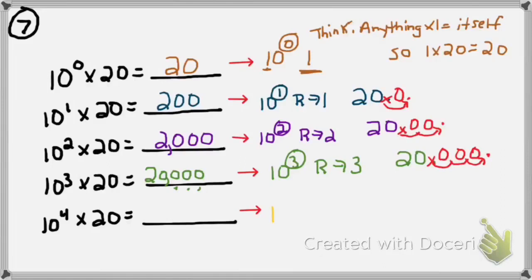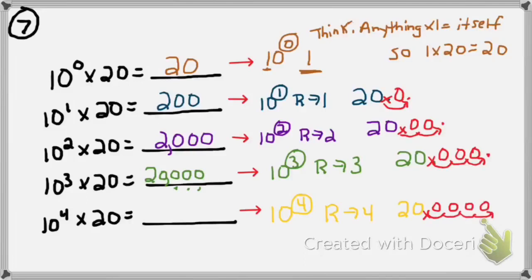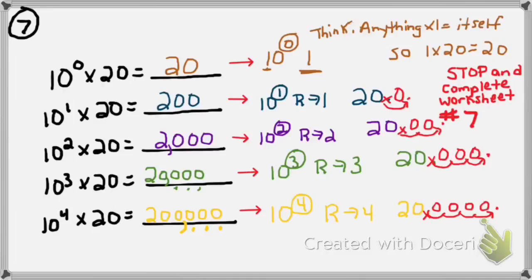Last: 10 to the 4th power times 20. It's greater than 1, so my decimal moves to the right four places because my exponent is 4. Write down 20, remove the invisibility cloak, cross out the decimal, and move it four places by adding place value zeros: 1, 2, 3, 4. So 10 to the 4th power times 20 equals 200,000. Please stop the video and complete worksheet number 7 right now.